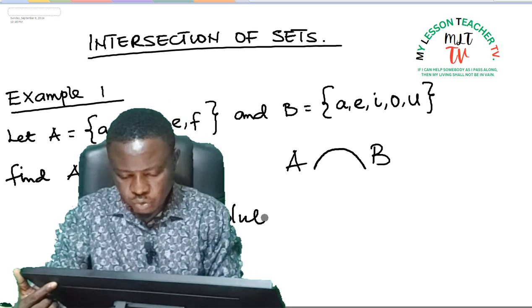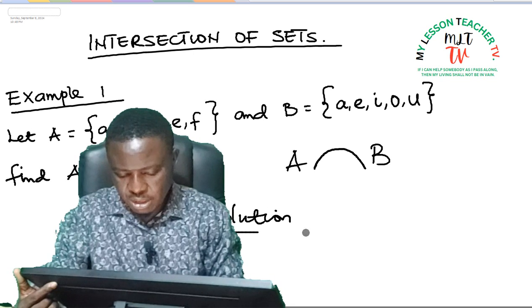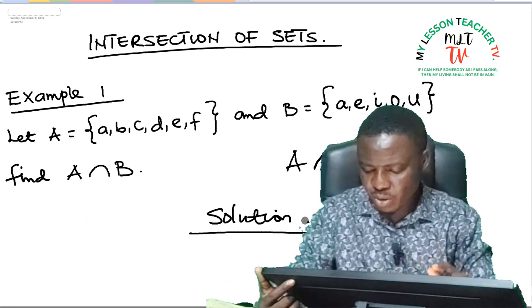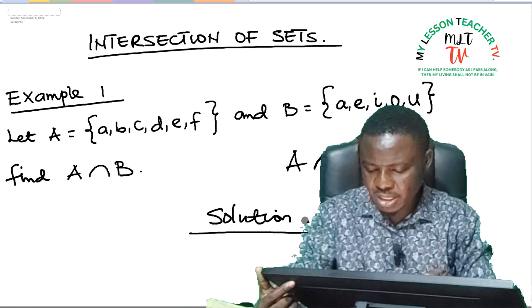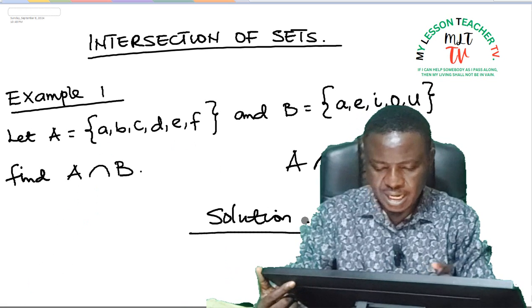It therefore means that you should select all the elements you can find in A and B without repetition. So, solution: we are given two sets A and B. Let A be equal to a set of elements A, B, C, D, E, and F.